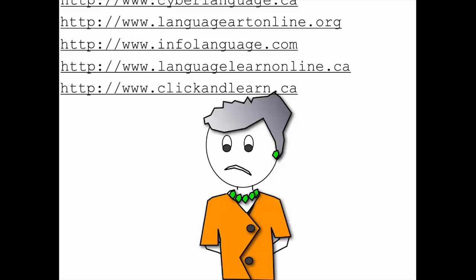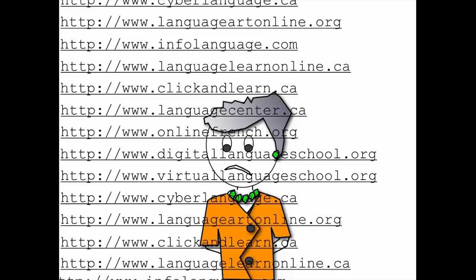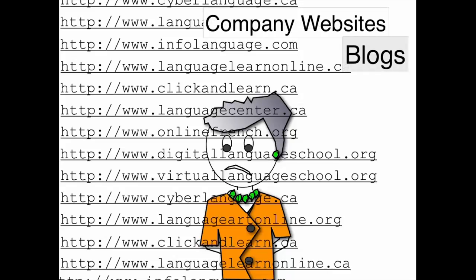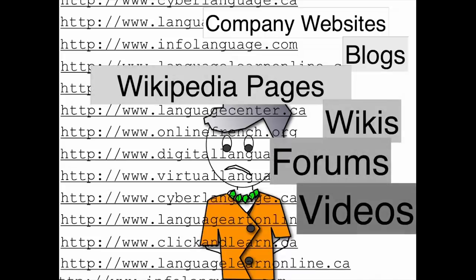Pierre and Joe both sent Mary a list of over 20 hyperlinks. Some were company websites, others were blogs, Wikipedia pages, wikis, forums, videos, etc.